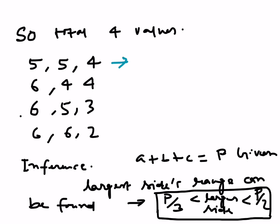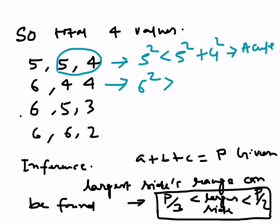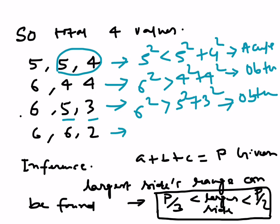So the answer: so total 4 values are permissible. This, if you want to check the type of triangle, so 5 square is 25. Obviously 5 square is 25, and these two's sum will be smaller than, so it will be an acute angle triangle. 6 square is 36, 4 square, 4 square: 16 plus 16. So 6 square is greater than 4 square plus 4 square, so this will be an obtuse angle triangle. 6 square is 36, this is 25, this is 9. So 6 square is greater than 25 and 9 is 34, so again obtuse angle triangle. Obviously 6 square is smaller than 6 square plus 2 square, so we will get an acute angle triangle. So inference: if A plus B plus C equal to P is given, the larger side's range can be found out. We can find out the values also. We can find out the type of triangle also.